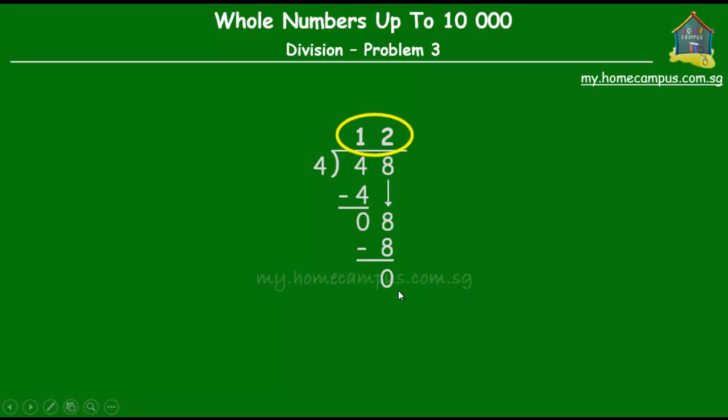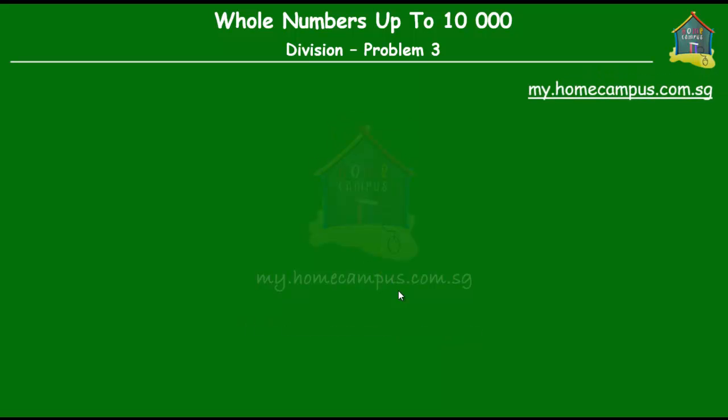So 48 divided by 4 is equal to 12. All right. So each child received 12 muffins. And that brings us to the end of this lesson.